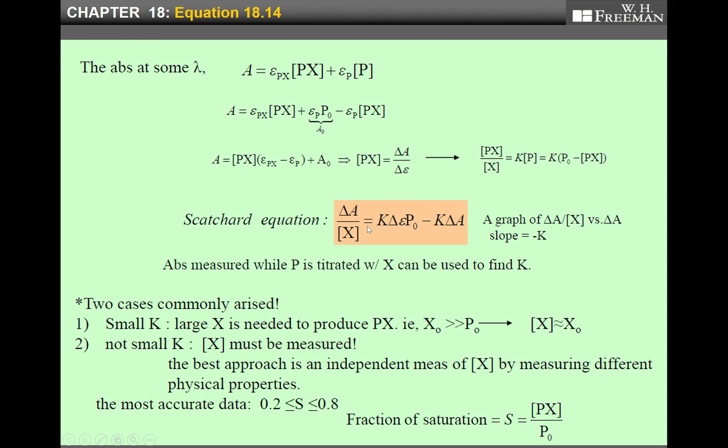If you move this A term to the right side, then we get ΔA. This PX is simply given by the difference in absorbance divided by the difference in molar absorptivity. So finally we reach ΔA divided by X equals K multiplied by Δε multiplied by P₀ minus K multiplied by ΔA. This is called the Scatchard equation for the determination of K.